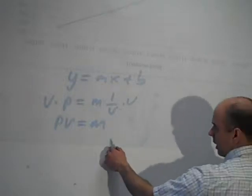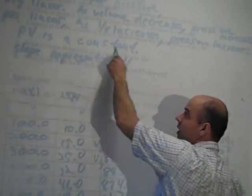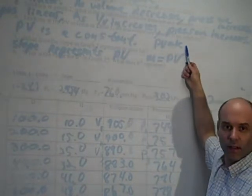Let's just not worry about the y-intercept. So p equals m times 1 over v. If you do a little bit of algebra, then p times v would be m. Right? So what is slope representing? Your p, v. P times v.